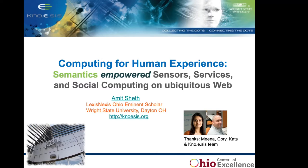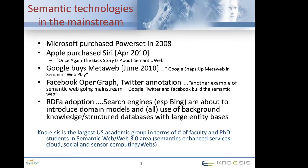One of my former students, Meena, did probably the first dissertation in the world in social media analytics. She joined IBM Research, was a superstar there, then joined Facebook, and is now moving to Seattle to work with Yann LeCun, one of the three Turing Award winners. The other person is Cory Henson, who is very successful at Bosch Research and Technology. Some of my junior students did internships with him — one was hired, another interned just last summer working on autonomous vehicles and semantics.